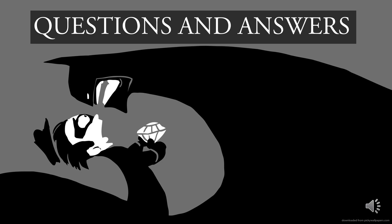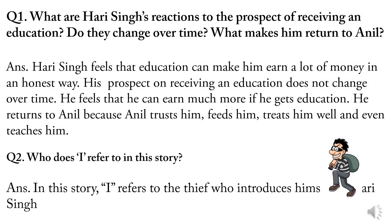Now let's discuss the question and answers related to this chapter. First question: What is Hari Singh's reaction to the prospect of receiving an education? Do they change over time? What makes him return to Anil? Answer: Hari Singh feels that education can make him earn a lot of money in an honest way. His prospect on receiving an education does not change over time — he feels he can earn much more if he gets education. He returns to Anil because Anil trusts him, feeds him, treats him well and even teaches him.